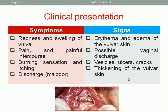The clinical presentation of vulvitis includes symptoms such as redness, swelling of the vulva, painful intercourse, continuous pain, burning sensation, itching, and sometimes discharge — such as candida discharge which is white and thick. Scratch marks are sometimes seen in the vulvar and perineal region due to itching.